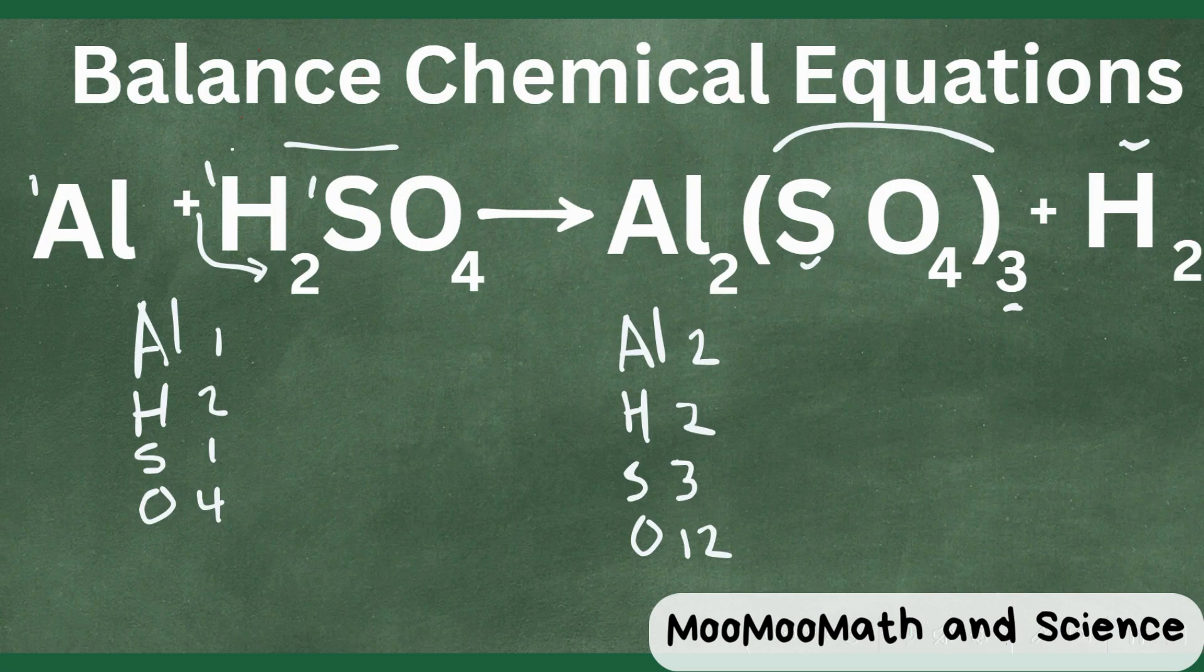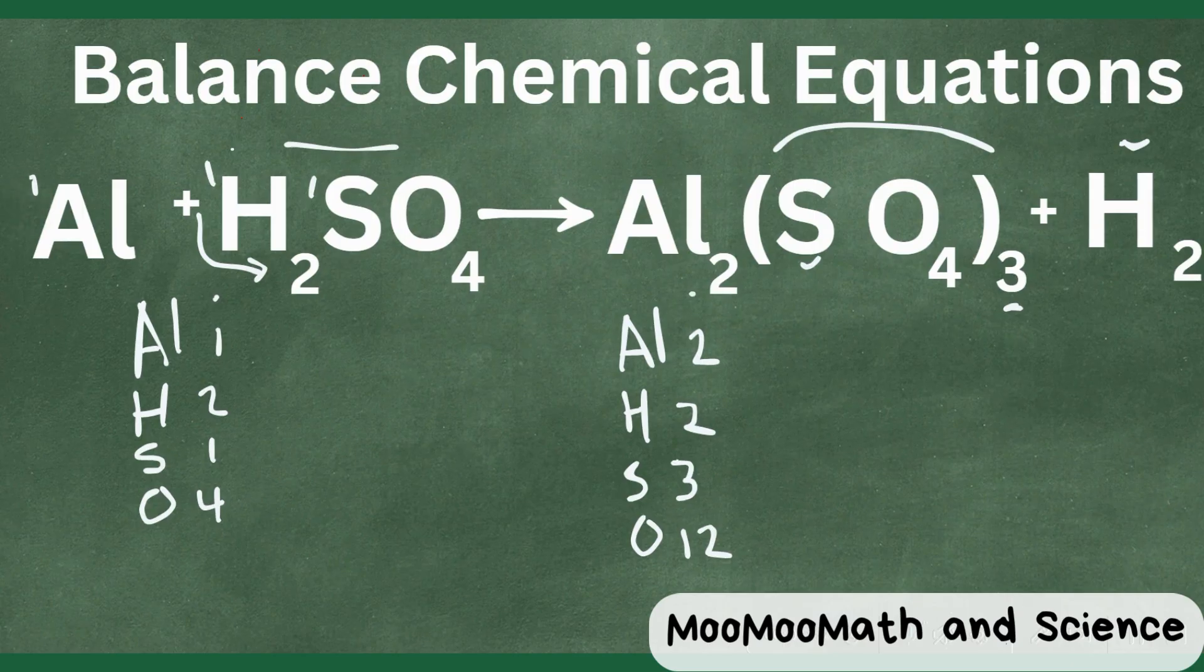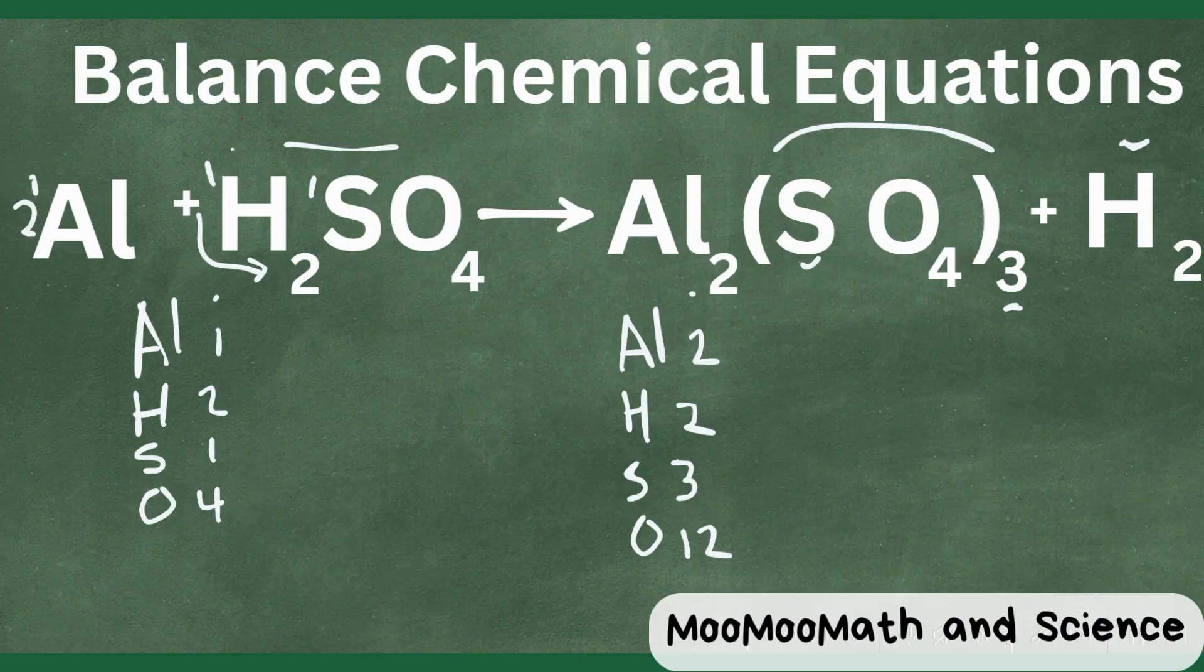So let's get started. How about now the aluminum, we have one and two so why don't we just change this to a two. Okay two times one is two. So now we have the aluminums balanced and for right now it looks like the hydrogens are balanced but let's look at the sulfur.